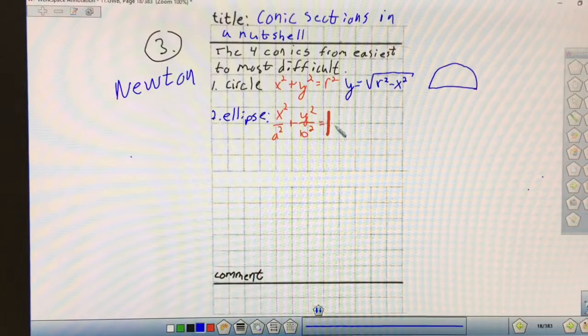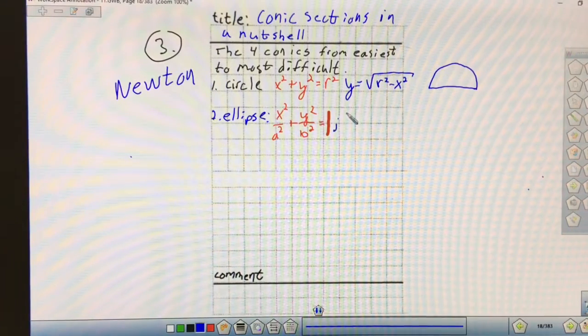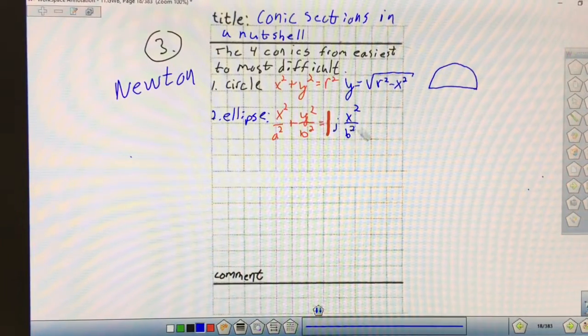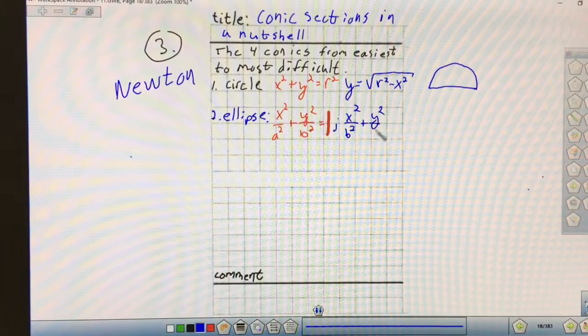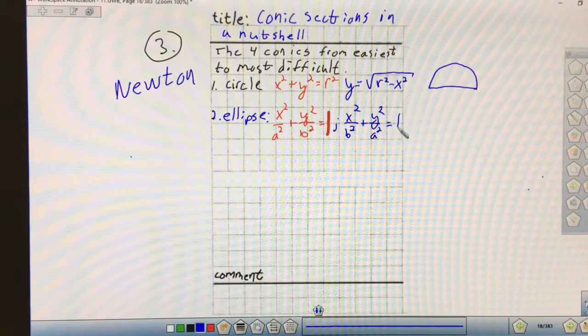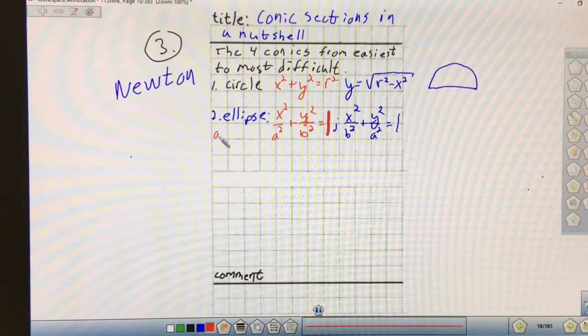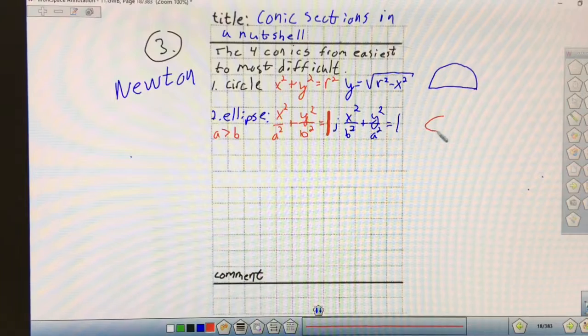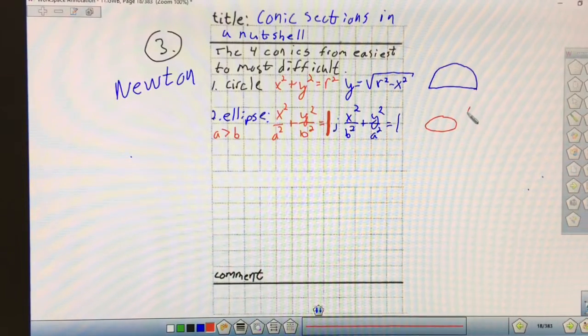Another version of it would be X squared over B squared plus Y squared over A squared equals one. The important note is that A has to be greater than B when you're dealing with an ellipse. That'll tell you whether it's a hamburger ellipse or a hot dog ellipse.